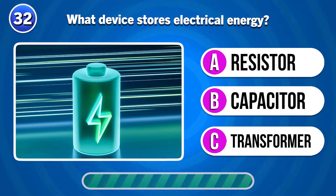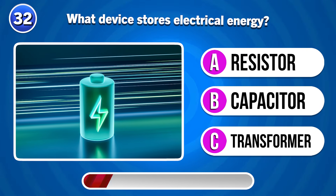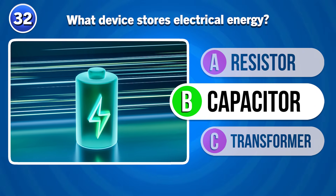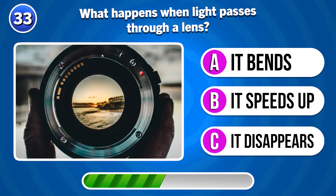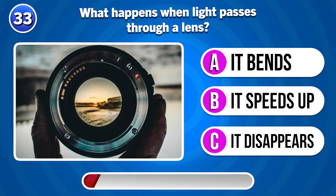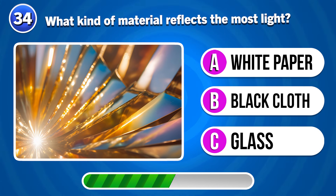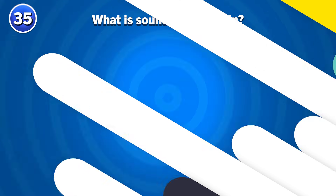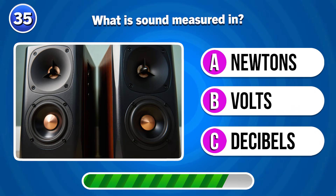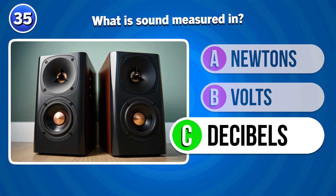What device stores electrical energy? Capacitor. What happens when light passes through a lens? It bends. What kind of material reflects the most light? White paper. What is sound measured in? Decibels.